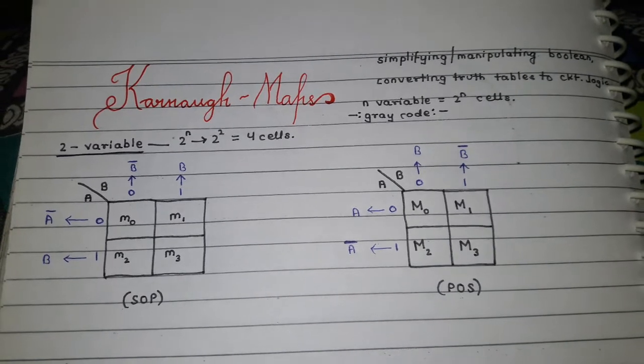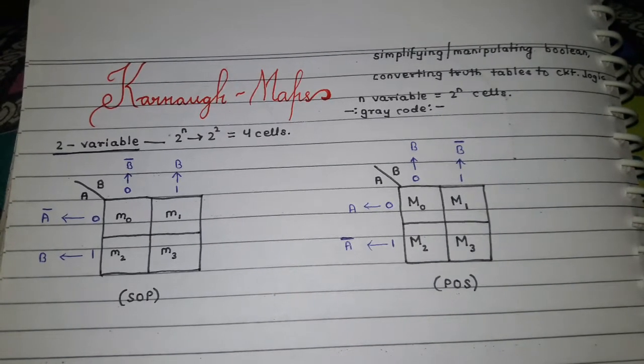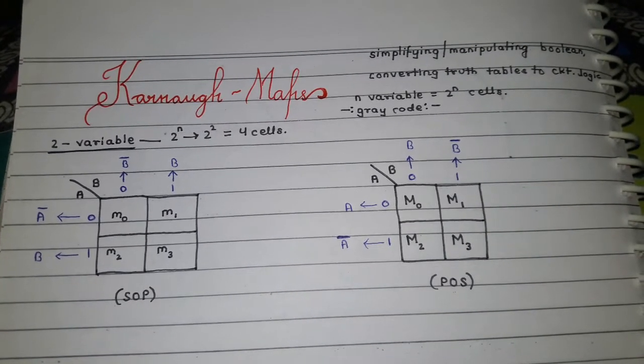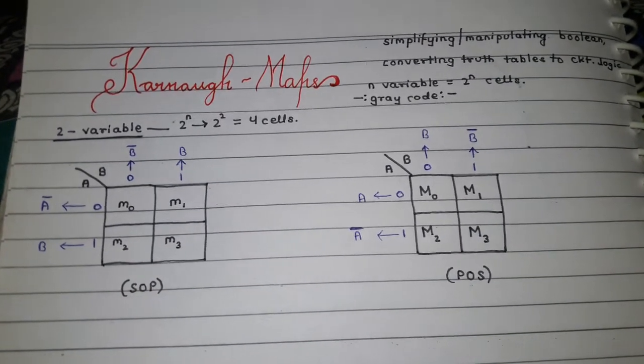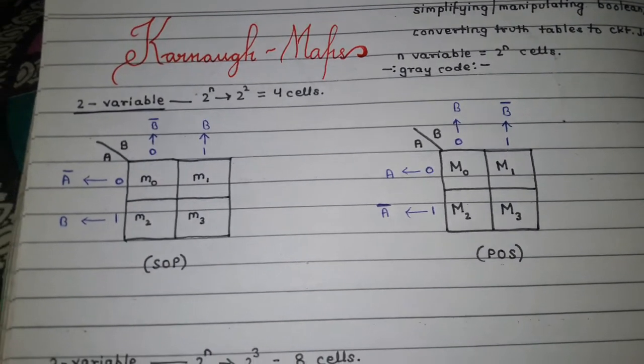The formula we're going to use is: if there are n number of variables, there should be 2^n number of cells, and gray code must be followed. Let's get started with two-variable Karnaugh maps.